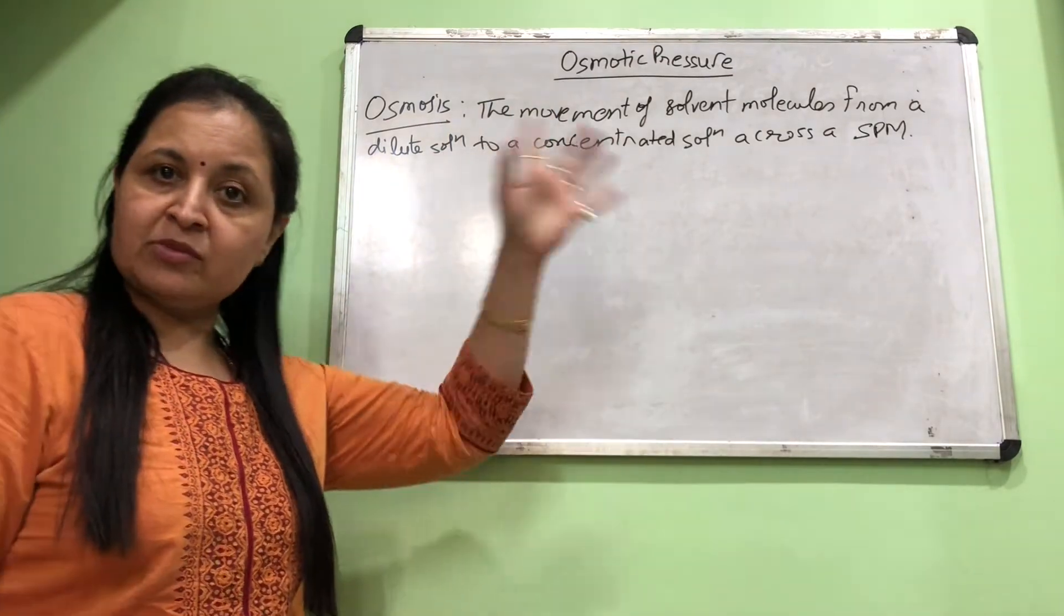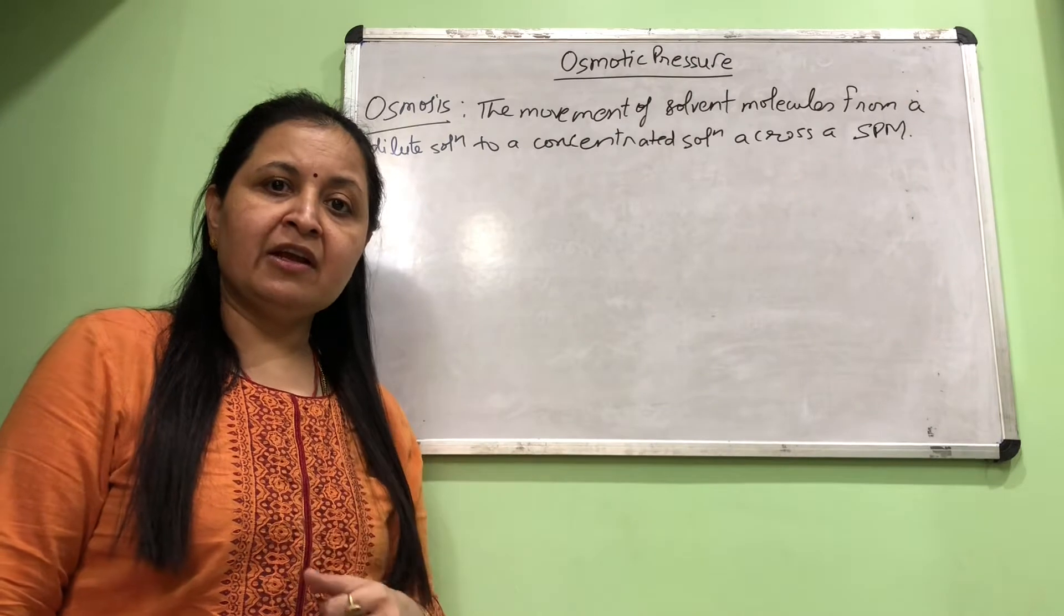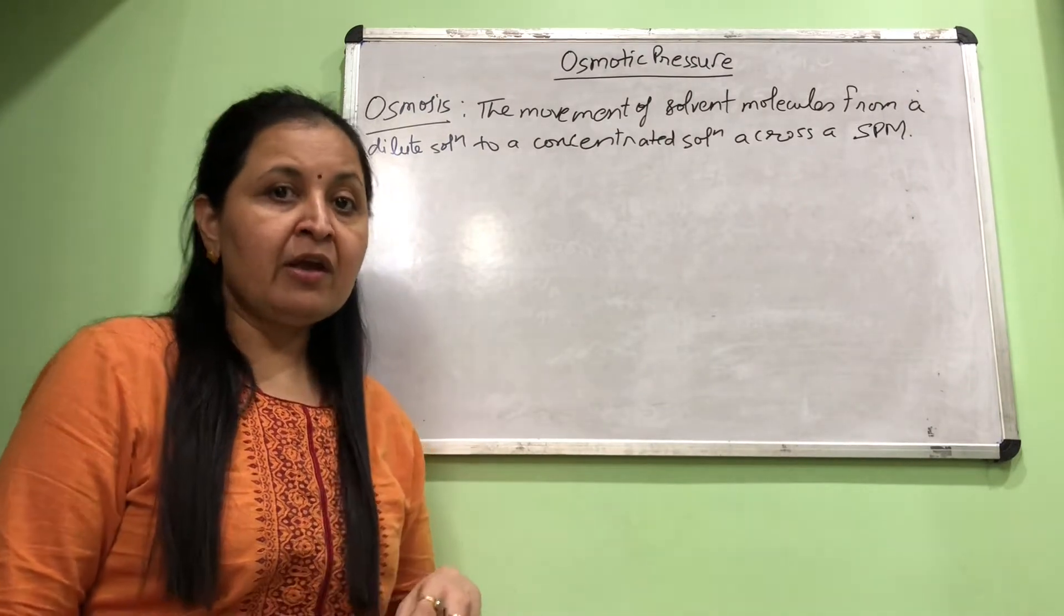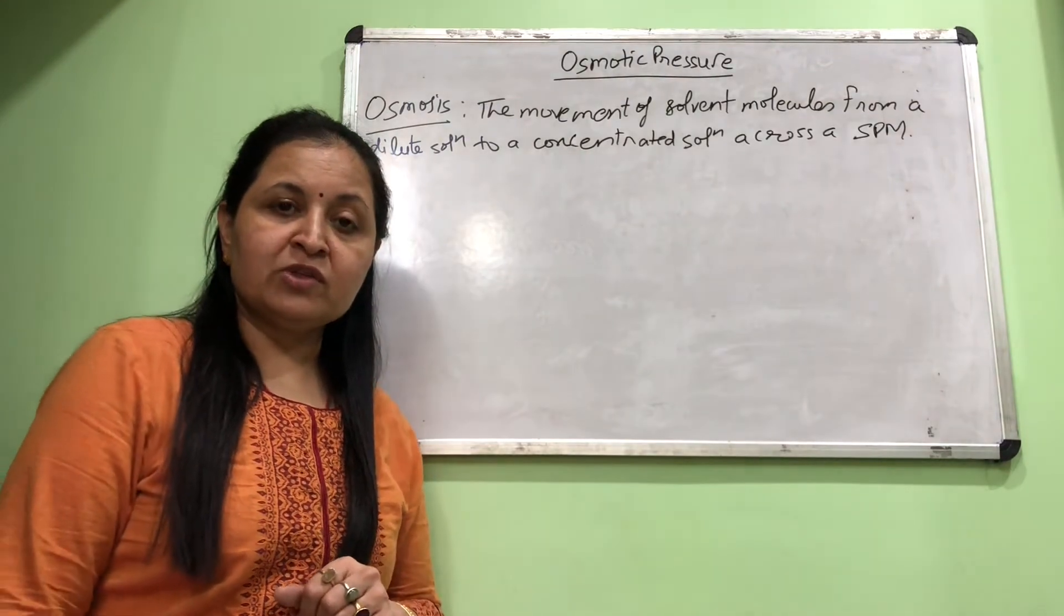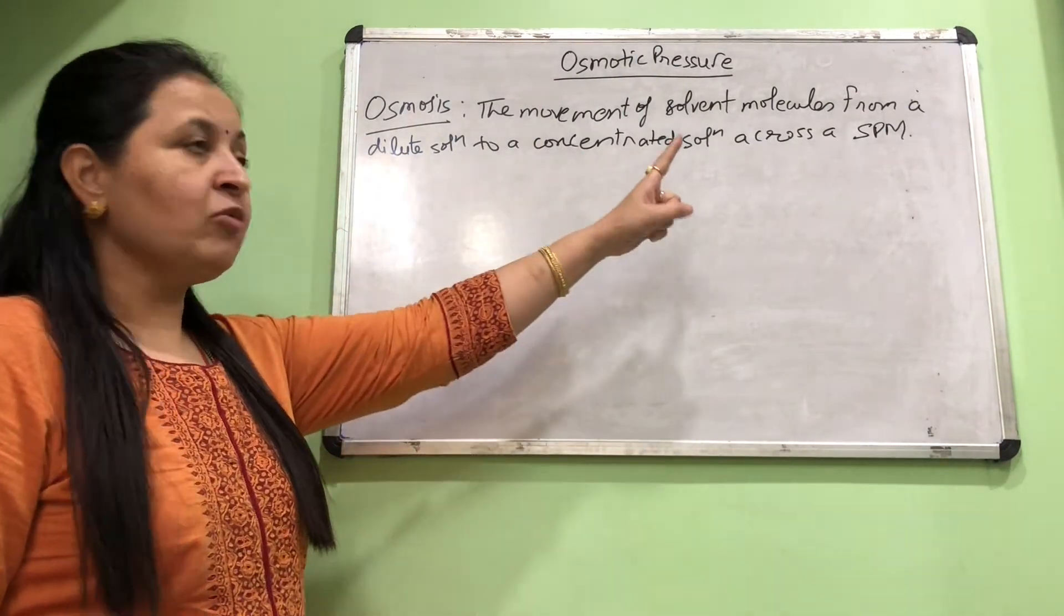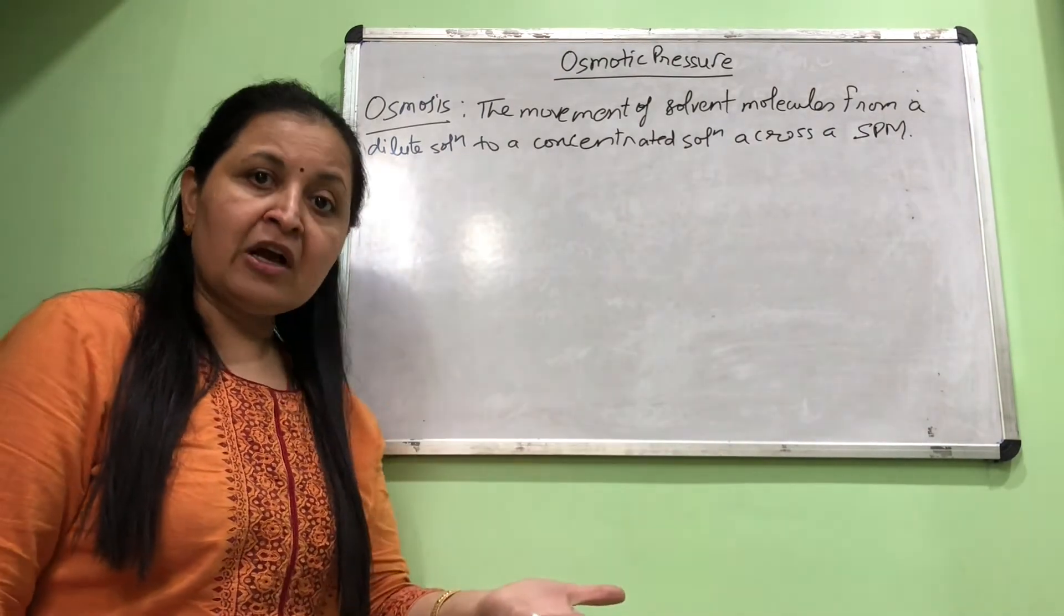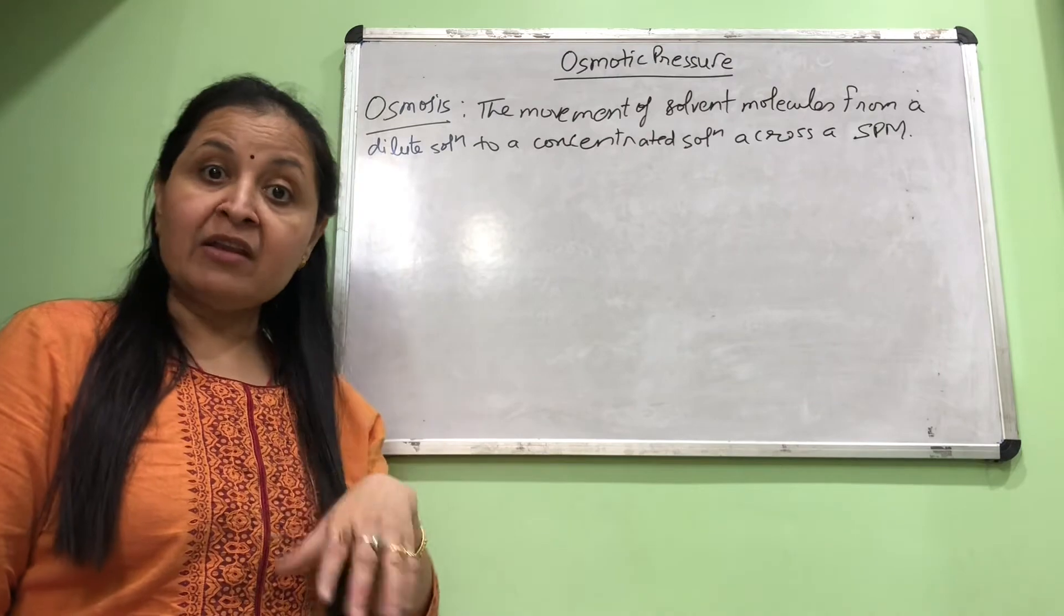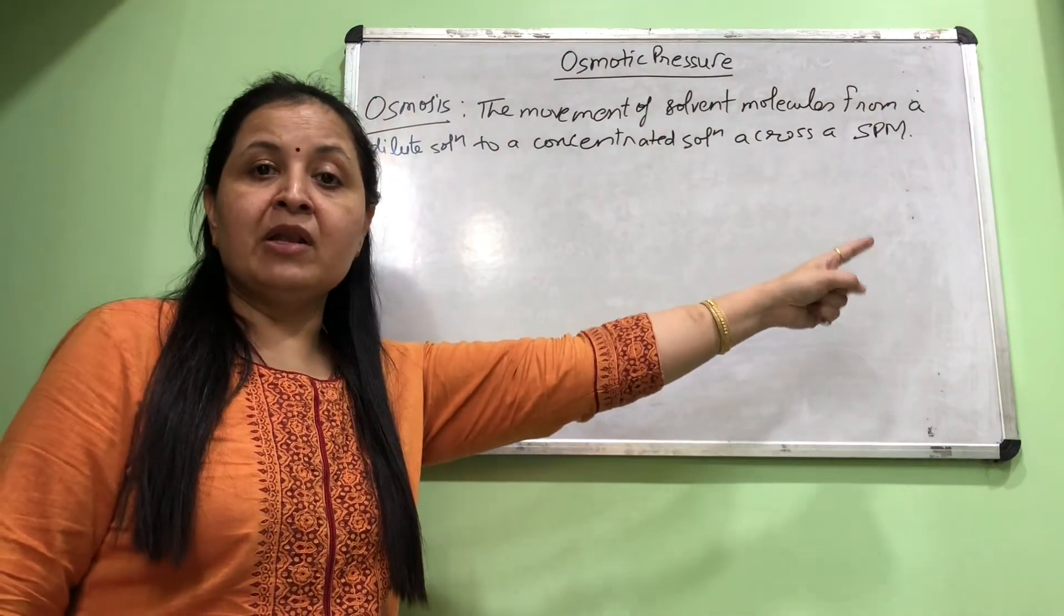The next colligative property, as I told you, is osmotic pressure. But before defining osmotic pressure, we need to define what is osmosis. So botany and zoology students must be very clear. Osmosis is the movement of solvent molecules from a dilute solution towards a concentrated solution when both are separated by a semi-permeable membrane.